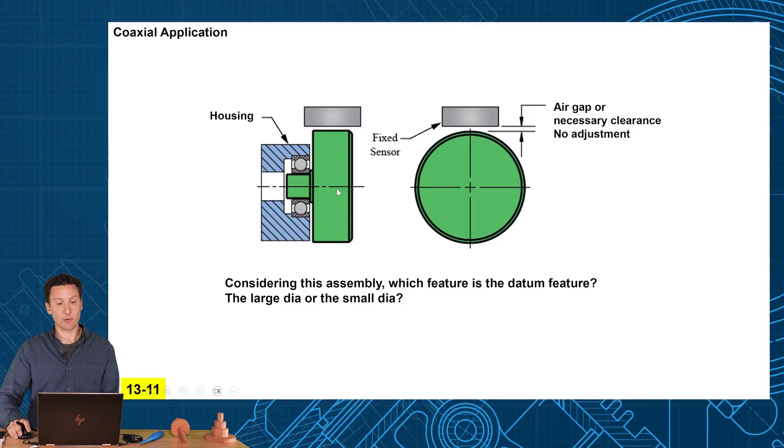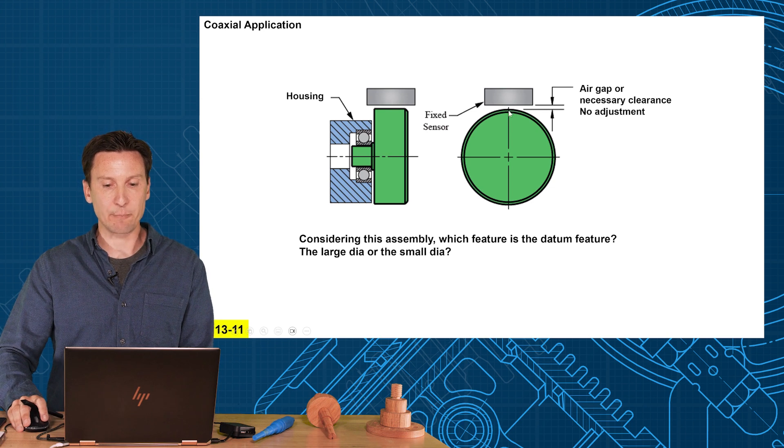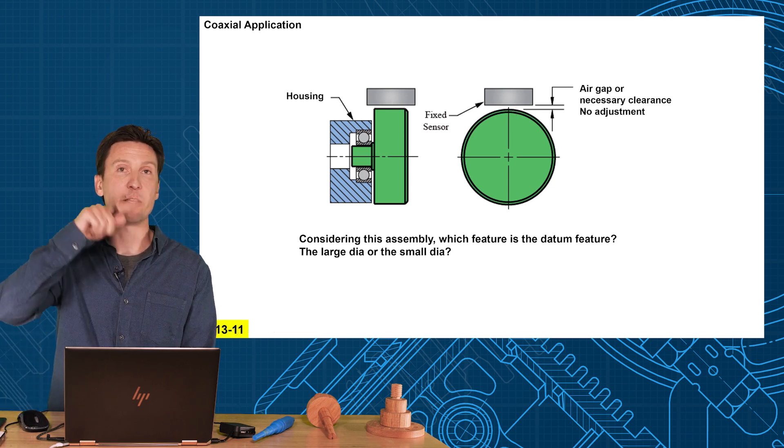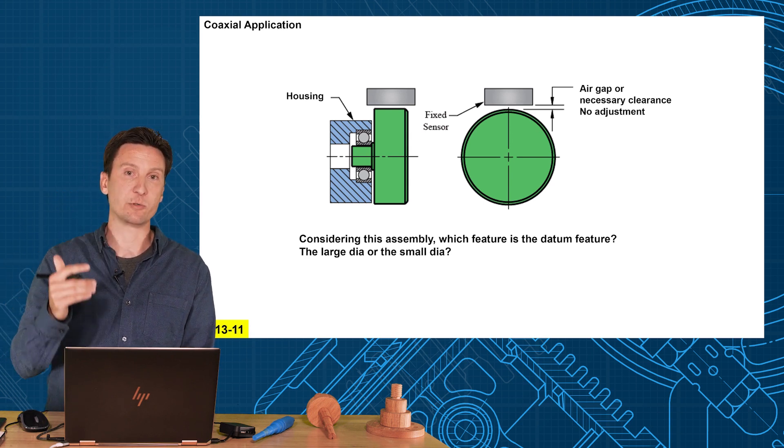Alright, let's look at this example of a rotating shaft, kind of the theme of this Unit 13 here. It mounts into a main bearing that's fixed in the housing, and there's a sensor above. There's a certain air gap or clearance that's always necessary between these parts. Like a sensor or something, you need to sense how fast it's rotating, too close and it'll rub, too far away, it won't sense anymore.